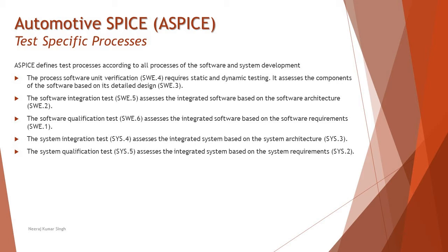Levels 4 and 5 exist but are not in the syllabus. For your information, a link has been included in the description if you want to understand all other standards and parameters of ASPICE — how it works for levels 4 and 5, and what SYS.4, SYS.3, SWE.2, SWE.1, and others mean. As part of the syllabus those were not discussed, but the link provides all the details. All standards for all levels are explained in full detail there.